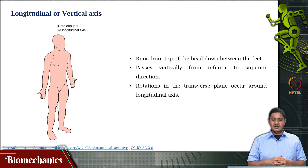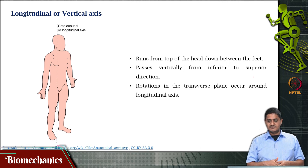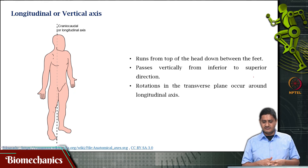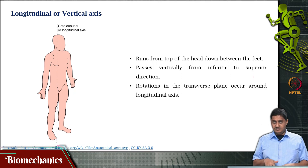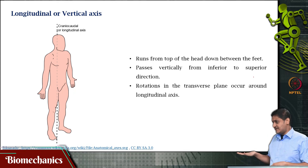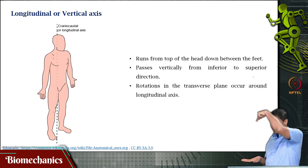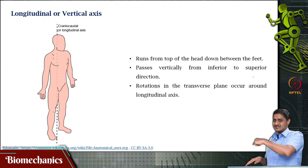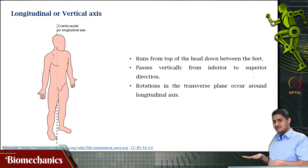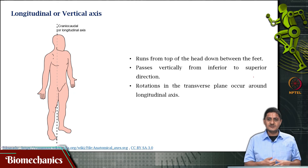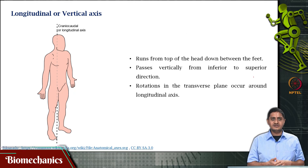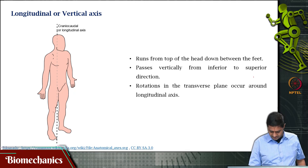The longitudinal or vertical axis goes from the top of the head to the space between the feet or the tailbone, passing vertically from inferior to superior direction. Any movements that happen in the horizontal plane — the transverse plane — will happen about this top-down axis. Rotation in the transverse plane occurs about the longitudinal or vertical axis.